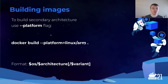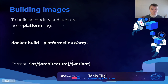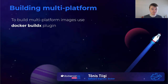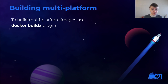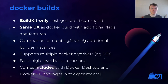When you're doing a build and want to build for a different platform than what your system natively uses, there's the --platform flag. You set the platform you want to build for — the value is a combination of the OS (usually Linux), the architecture, and an optional variant used for 32-bit ARM systems. But you probably don't want to build a single-platform image; you want to build a multi-platform image. For that, the easiest way is the docker buildx command, which is our next-generation build command built on top of the new BuildKit engine.